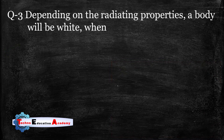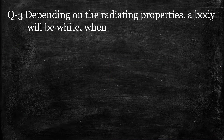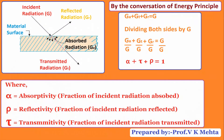Question number three: depending on the radiating properties, a body will be white when — so what is a white body? Whenever incident radiation falls on the surface, it will reflect all the radiation; it will not absorb and will not transmit the radiation. Here alpha is absorptivity (fraction of incident radiation absorbed), rho is reflectivity (fraction reflected), and tau is transmissivity (fraction transmitted).